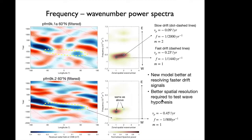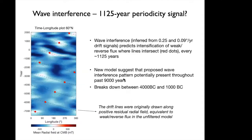We still need better spatial resolution to test the wave hypothesis — we'd like to resolve something at M=3, where we can predict the frequency based on our hypothesized relationship. Looking at the wave interference plot for the unfiltered new model, we plot drift lines following positive residual flux. Where these intersect, we get constructive interference and the appearance of weaker reverse flux patches at high latitudes. The pattern for the last 3,000 years matches the previous model. We may also see similar weak reverse flux extending back to 9,000 years, though the pattern breaks down between 4000 and 1000 BC.